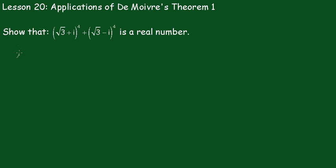So we're going to let z1 equal √3 + i and z2 equal √3 - i.